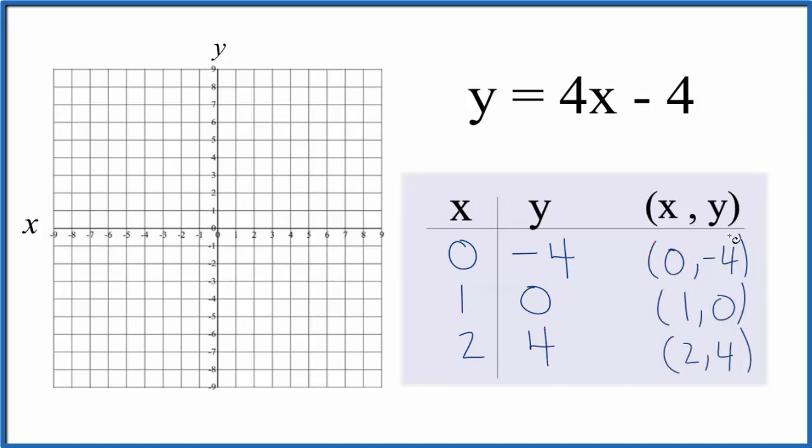So these are the points that we'll graph for the linear equation y equals 4x minus 4. So we have x is 0, y is negative 4.